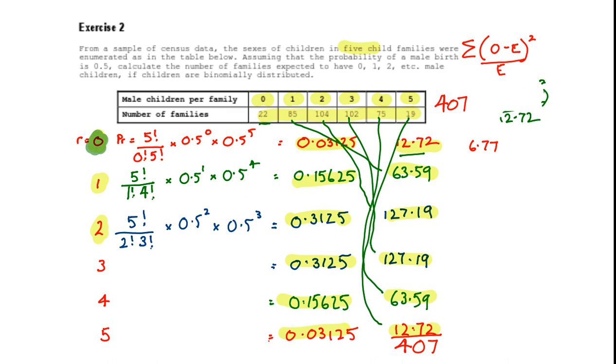So for that last calculation for example we would be looking at 19 minus 12.72 squared divided again by 12.72. So those are the values I've calculated here.